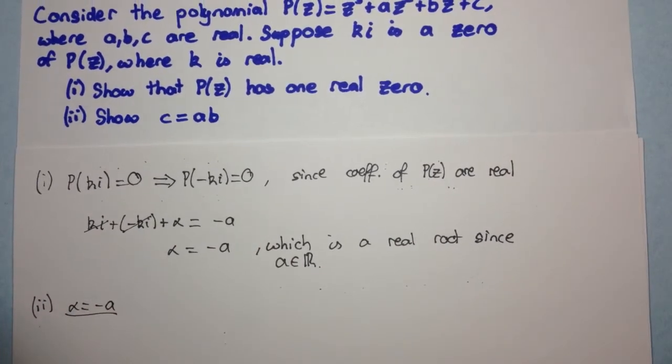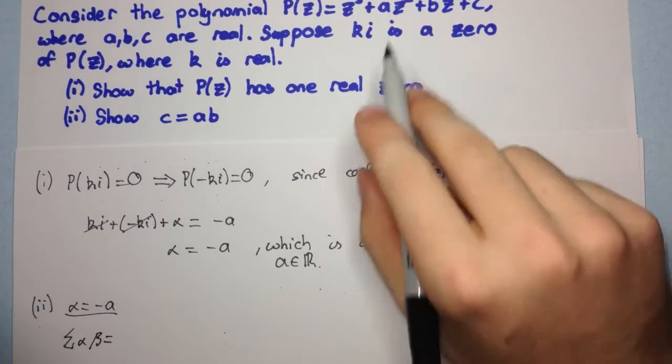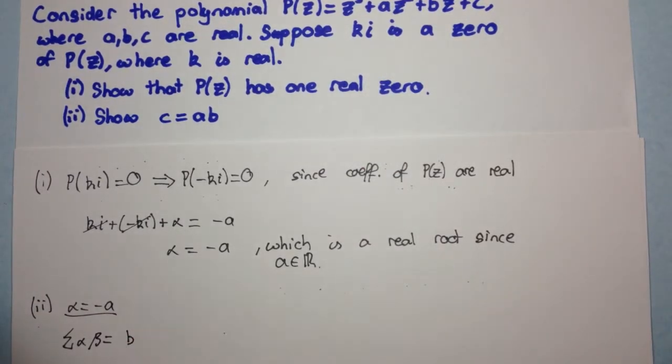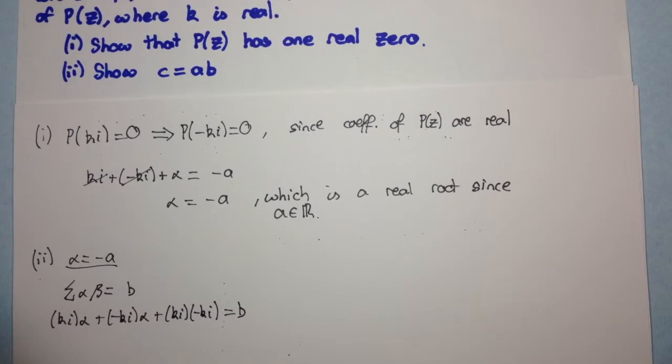Now, let's consider the sum of roots two at a time. So, that's going to be equal to, now this was minus A, so this is going to be plus B. So, that's going to equal B. Now, what's the sum of roots two at a time? That's Ki times Alpha, plus minus Ki times Alpha, plus Ki times Ki, and that's equal to B. All right, let's move that up.